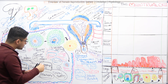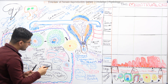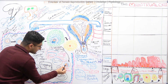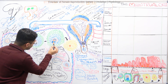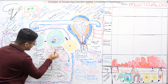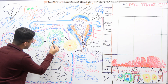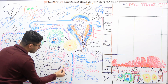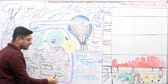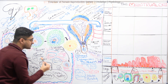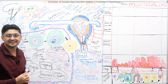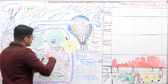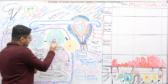Due to the proteolytic enzymes, the Graafian follicle ruptures. The oocyte comes out, surrounded by zona pellucida. The granulosa cells form layers on top — this is called corona radiata. This process is ovulation.